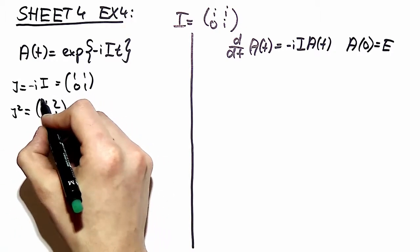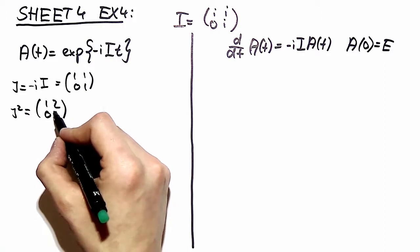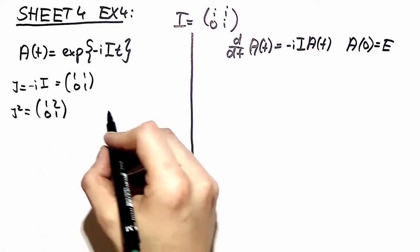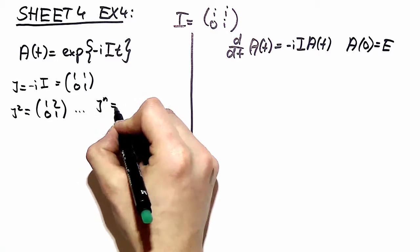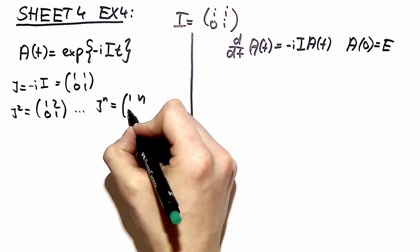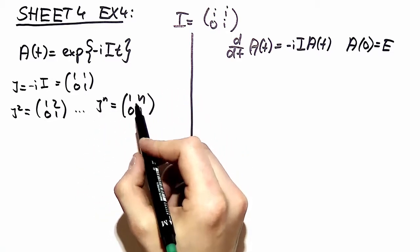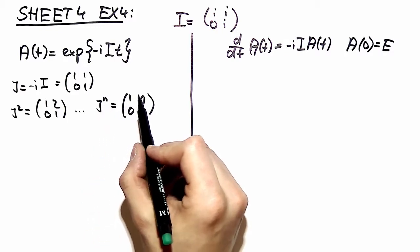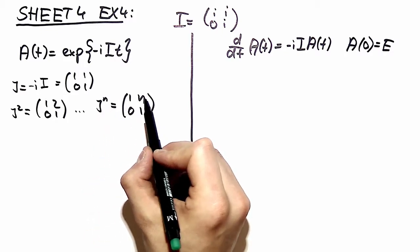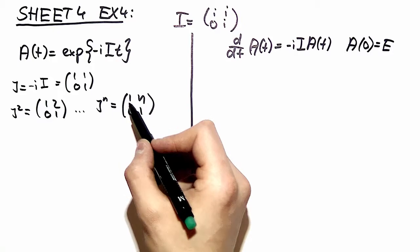And if you do some more examples you spot immediately that this can be generalized and J to the nth power is n on the upper right matrix element and ones on the diagonal. Well this general form makes it possible to calculate the Taylor series and we can insert it immediately.